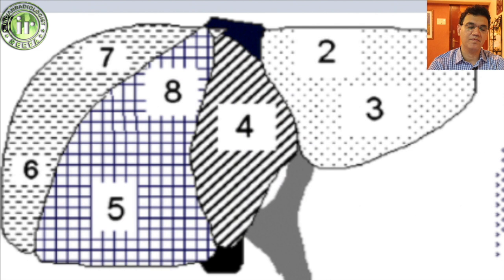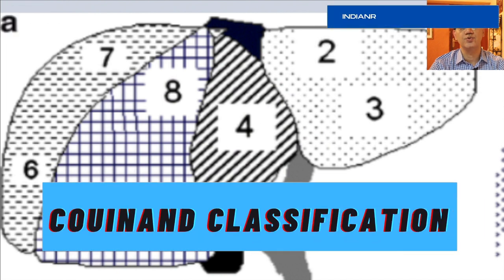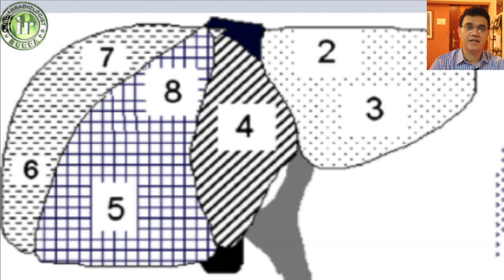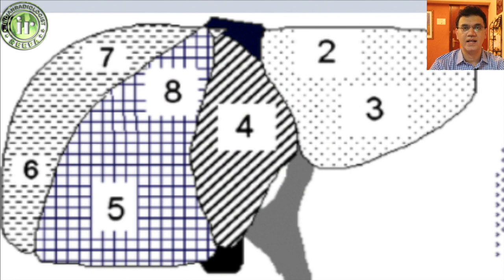We know liver segments very easily on CT scan, but they are easily seen on ultrasound as well, and the way of classifying these segments on ultrasound is the same system. It is the Couinaud classification of hepatic segments, where the liver has been divided into eight segments based on vascularity as well as the biliary radicals — each segment has its own inflow of blood, outflow of blood, and a biliary radical.